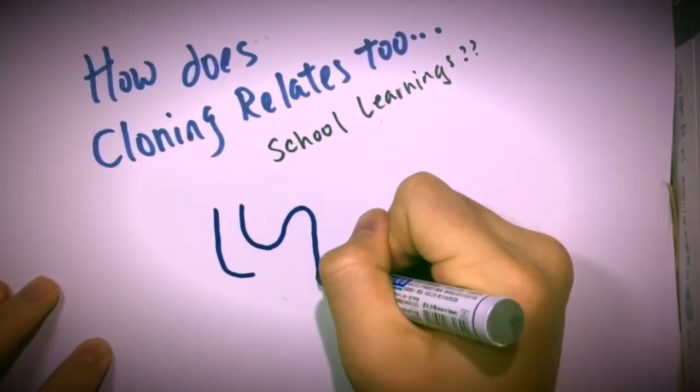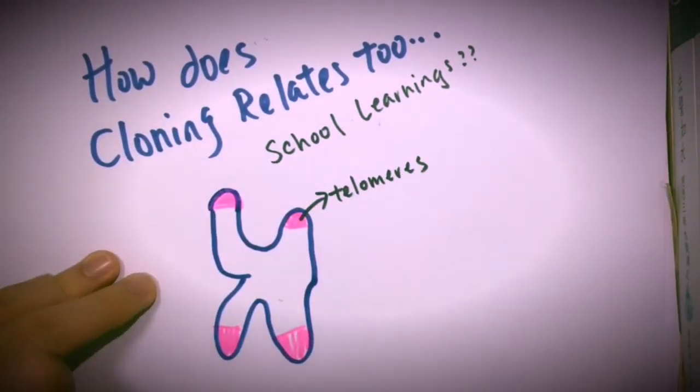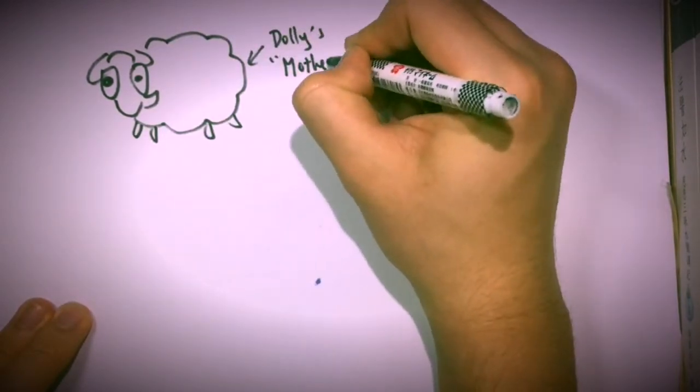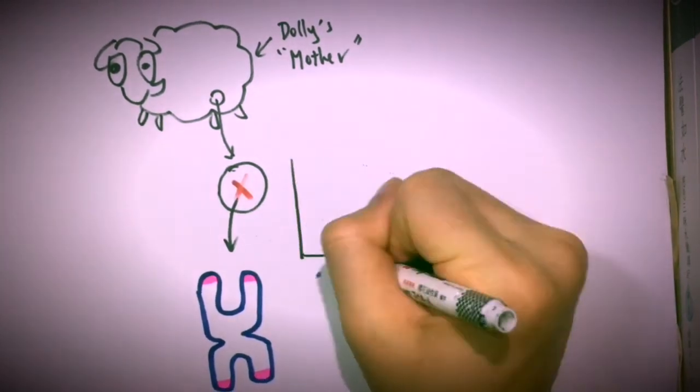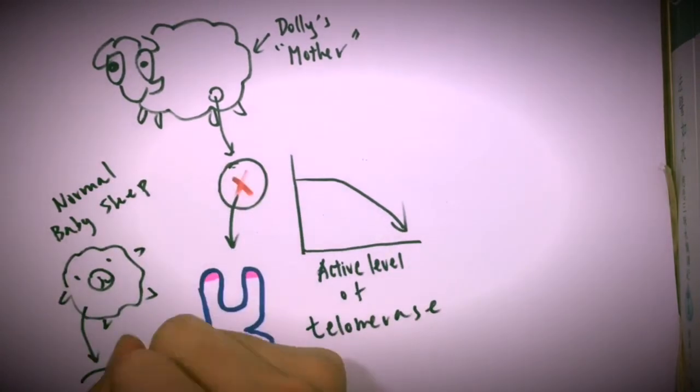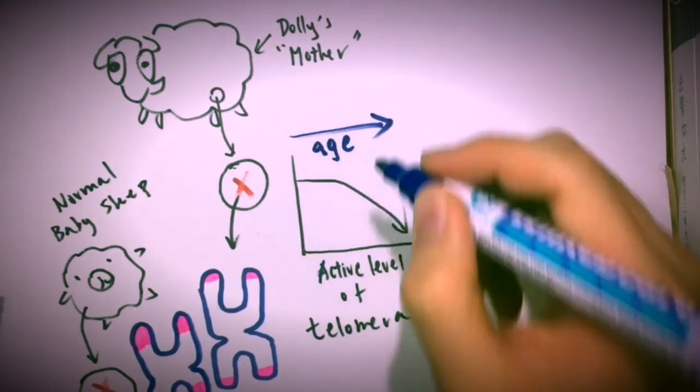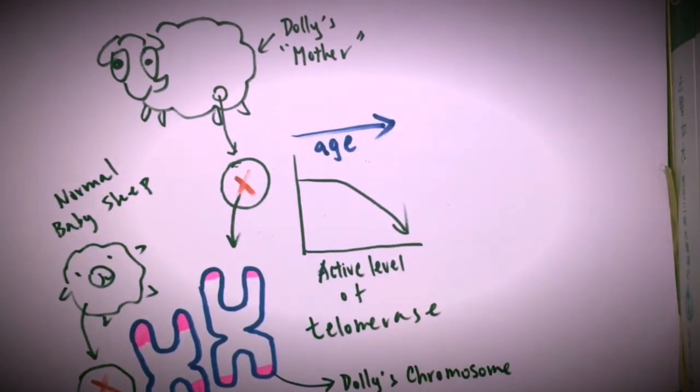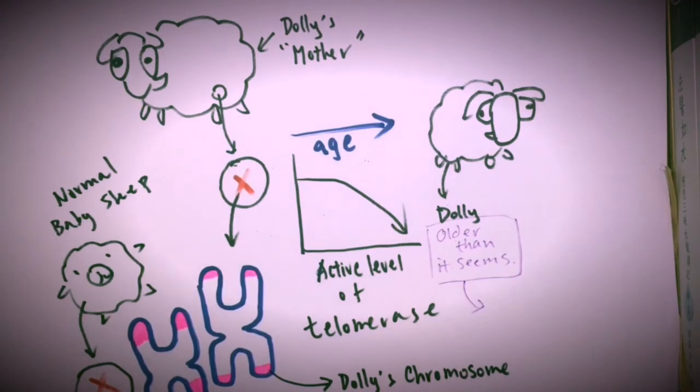And how does all this stuff relate to school? Well, the answer is telomeres. Dolly's mother has chromosomes that have shorter telomeres and a low active rate of telomerase, while a newborn sheep has chromosomes with longer telomeres. Because Dolly is a clone of the somatic cell of his mother, Dolly's chromosomes will be shorter, which means Dolly's cells won't be able to divide as much, which means Dolly's life is shorter. This effect is called premature aging.